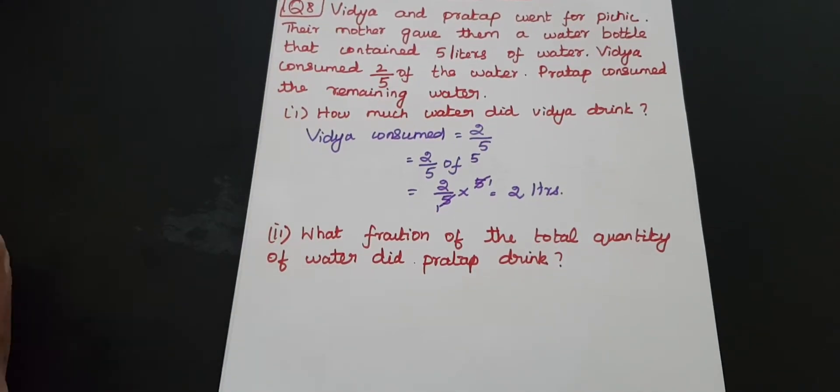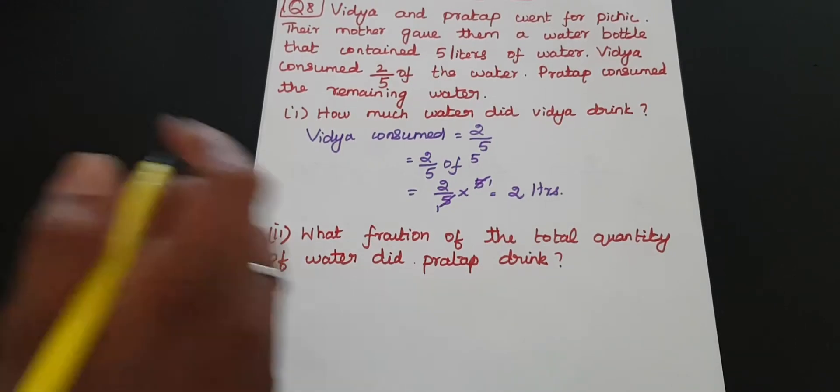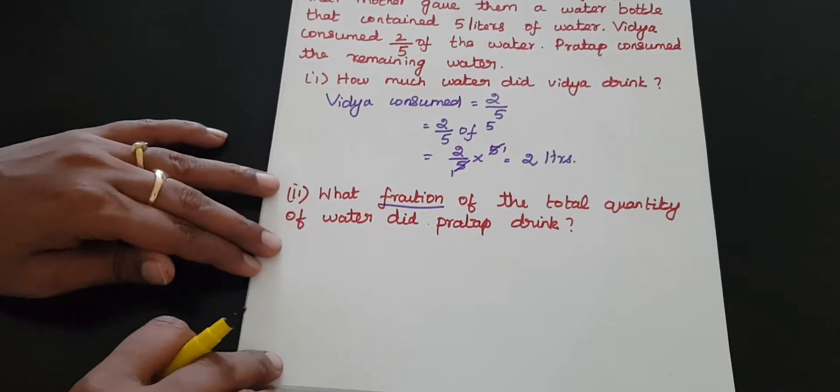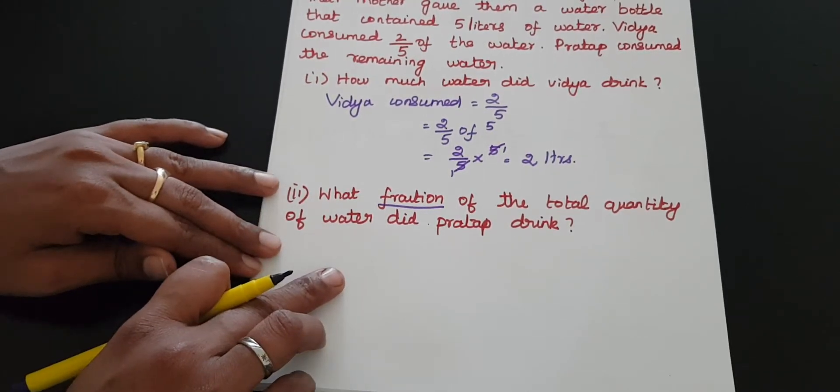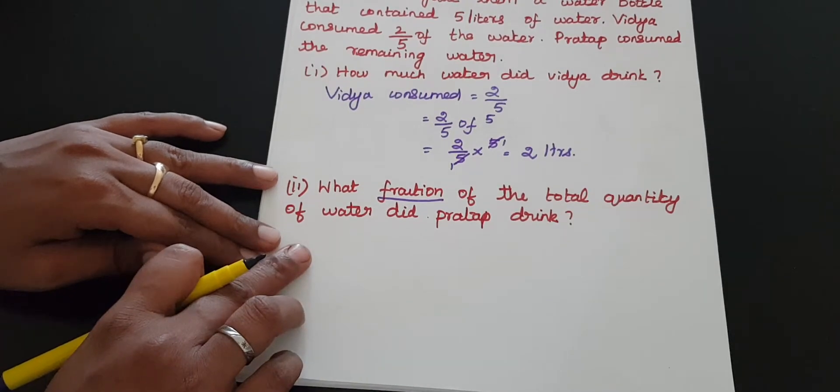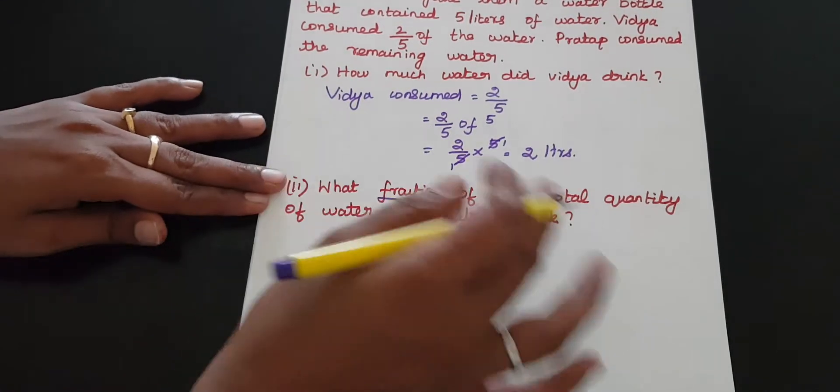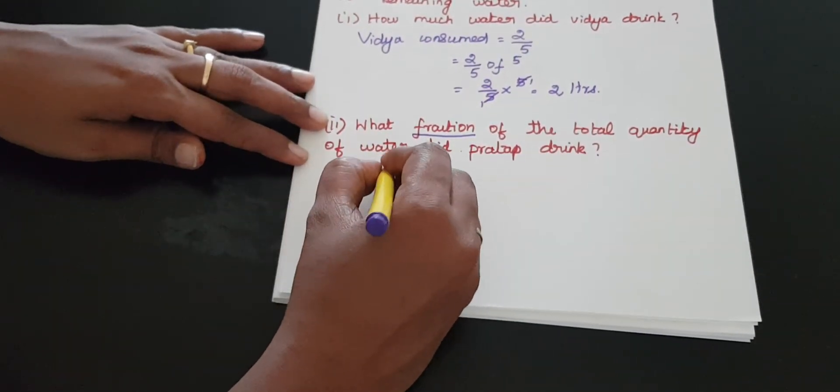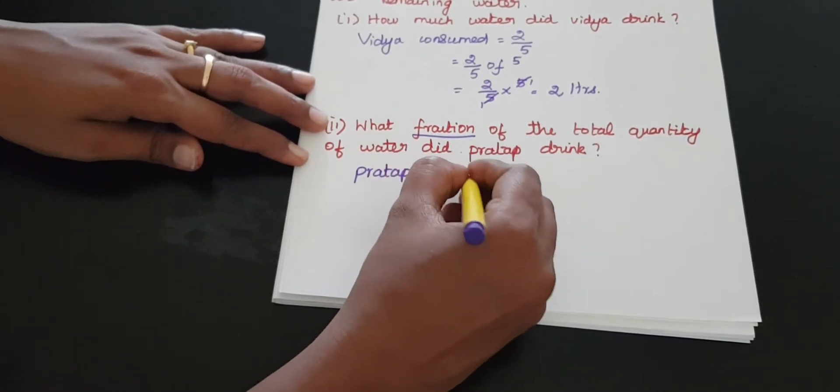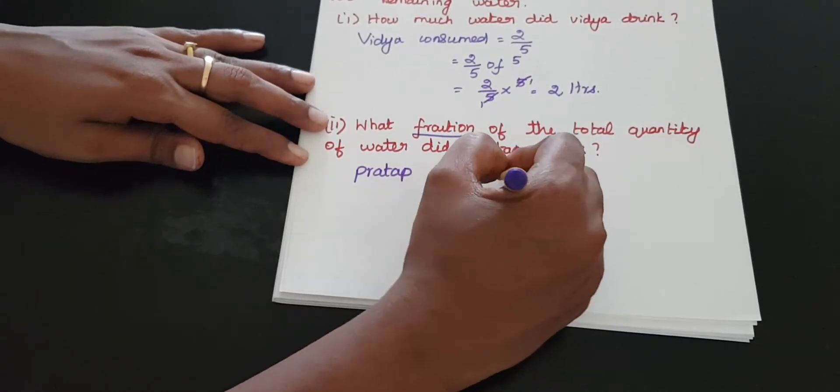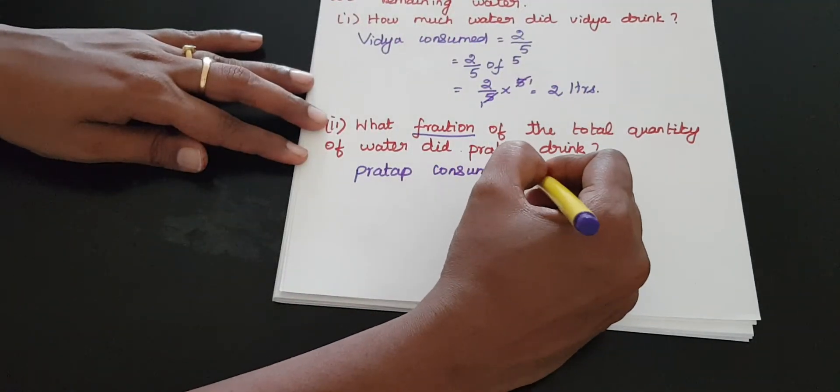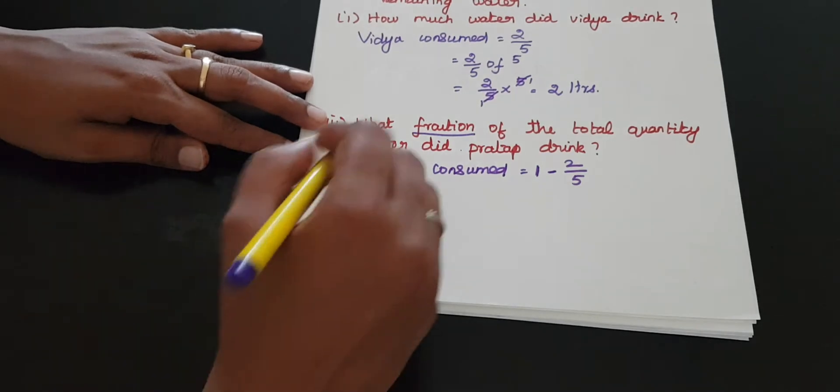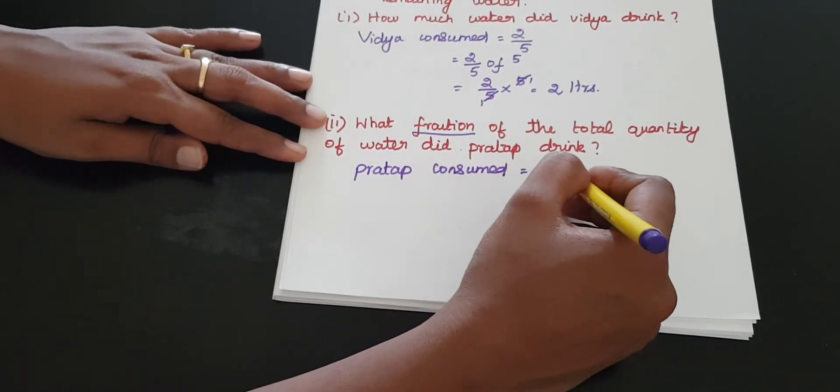What fraction of the total quantity of water did Prathap drink? We need to find the fraction. So Prathap consumed one minus what Vidya consumed, that is 2 by 5, so 1 minus 2 by 5.